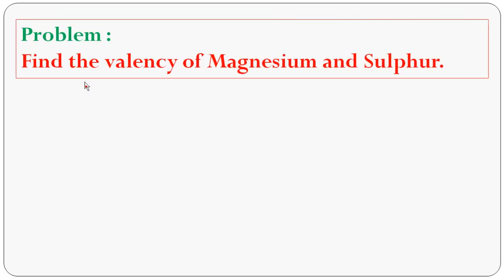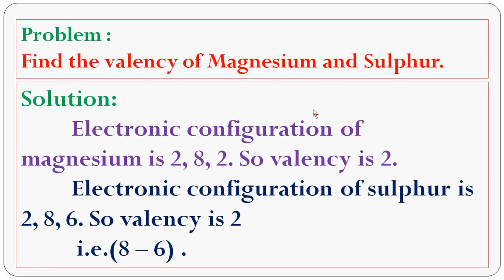Now let's solve a problem: find the valence of magnesium and sulfur. Magnesium has atomic number 12, so its electronic configuration is 2, 8, 2. The valence electron is 2, so its valence is 2. Now sulfur has atomic number 16, so its electronic configuration is 2, 8, 6. Since it has more than 4 electrons in the valence shell, we apply the formula: 8 minus 6 = 2. So both magnesium and sulfur have valence 2.